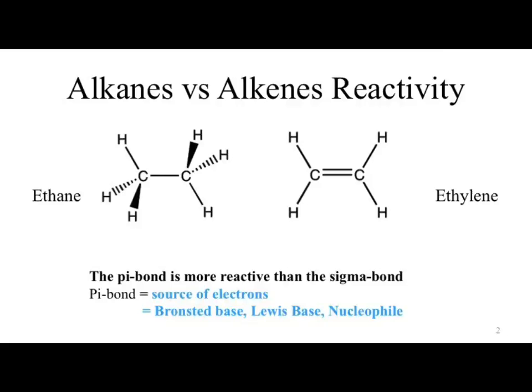When we look at the reactivity of our alkanes and alkenes: alkanes are all sigma bonds, and to form sigma bonds, hybridization has to involve some type of S orbital. When we move to double bonds with alkenes, we have a different type of bond — a pi bond. That pi bond is higher in energy and more accessible for reactions, so that's our reactive source and our source of electrons. With electrons, it can act as a Bronsted base, Lewis base, nucleophile, and so on.